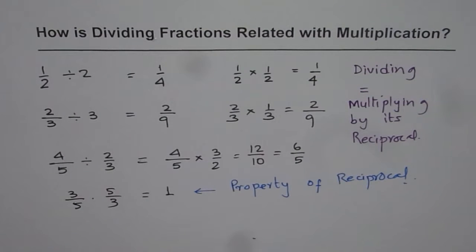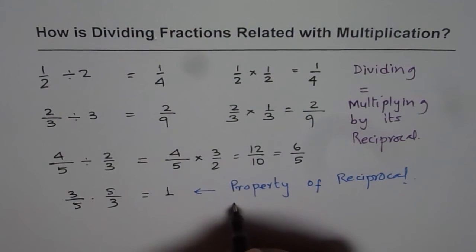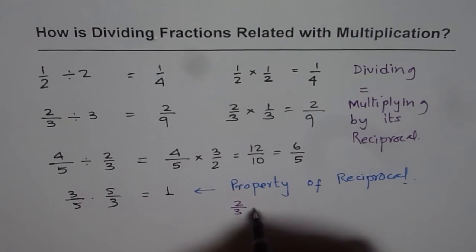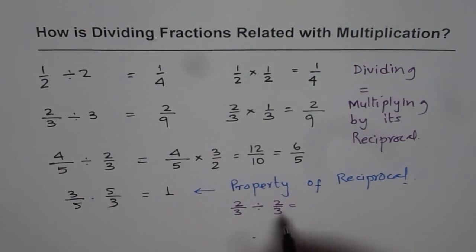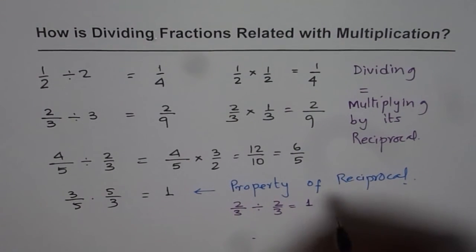So if you multiply a number with its reciprocal, you will always get 1, right? So that is to say that if you are dividing 2 over 3 by 2 over 3, what do you get? If you divide a number by itself, you get 1, correct? What is reciprocal of 2 over 3?